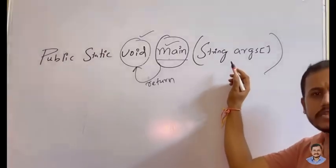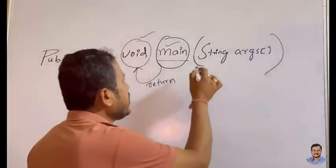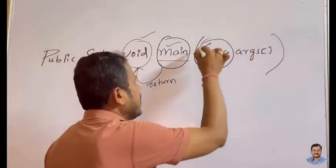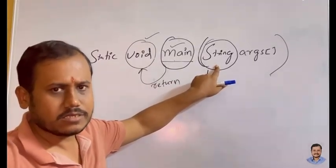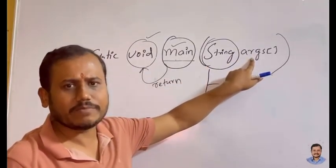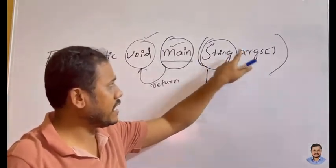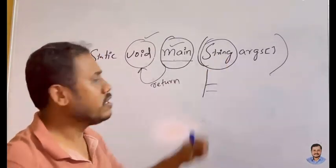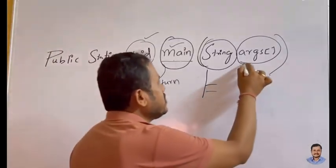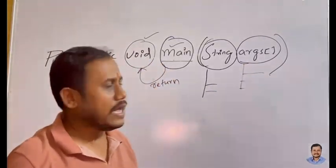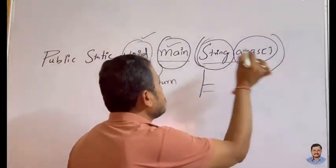Now we will discuss what is this String args. In Java, String is a data type as well as a class — it can be used in both ways. Here, args is nothing but an array of String type. The question is: can I change this args name? Yes, you can keep whatever name you want for the array, but the data type should be of String type.